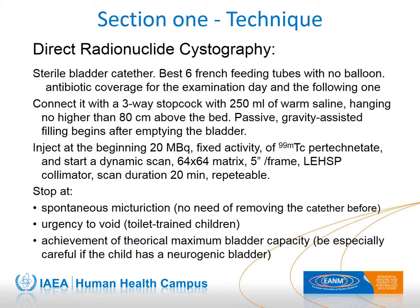Direct radionuclide cystography (DRC) has substantially the same technical principles as voiding cystourethrography (VCUG) — that is, filling of the bladder with an indwelling catheter connected to a bottle. The bladder catheter is positioned under maximized sterile conditions, and a full-dosage antibiotic coverage is prescribed for the day of the examination and the following one. For DRC, the suggested catheter is a urinary catheter with no balloon, allowing the child to void when the stimulus arrives. The radiopharmaceutical is injected directly into the bladder by a three-way stopcock at the beginning of the scan, and the tube is then connected to a bottle of warm saline as the bladder is progressively filled.